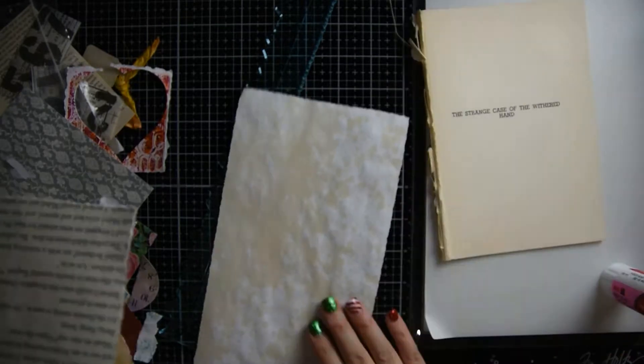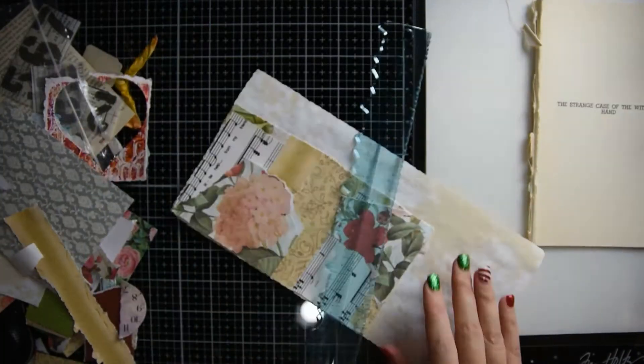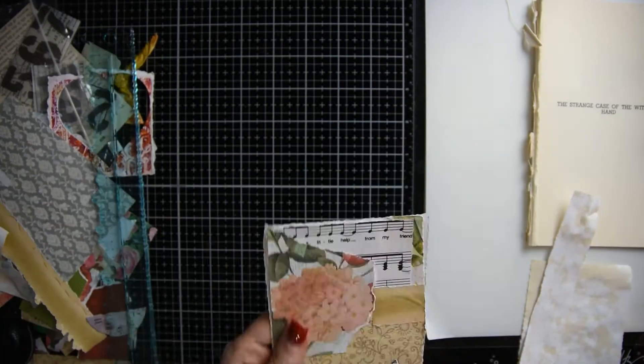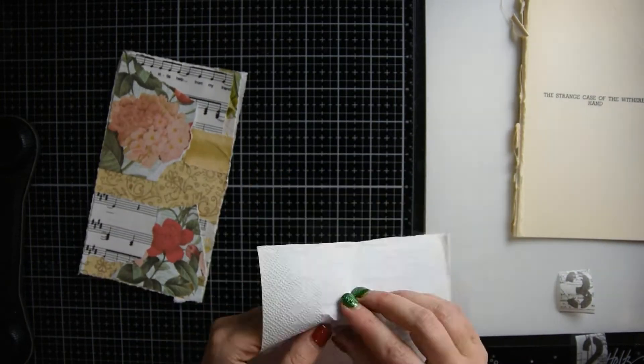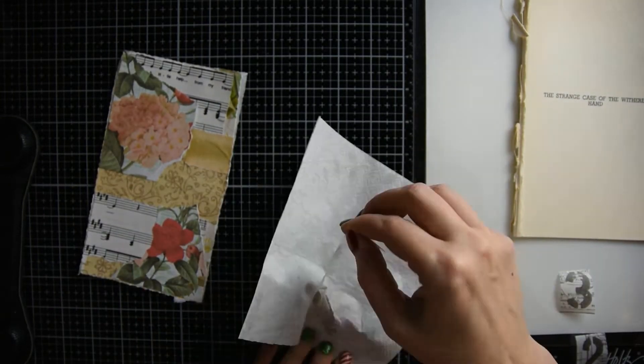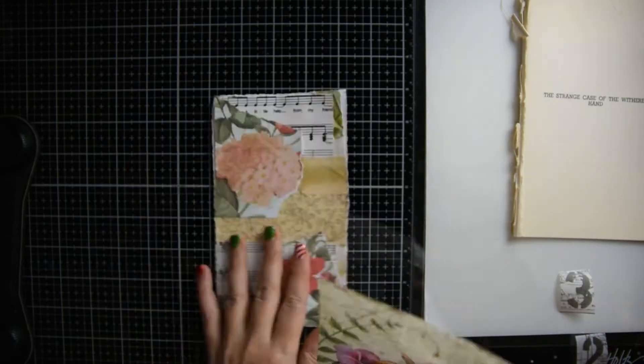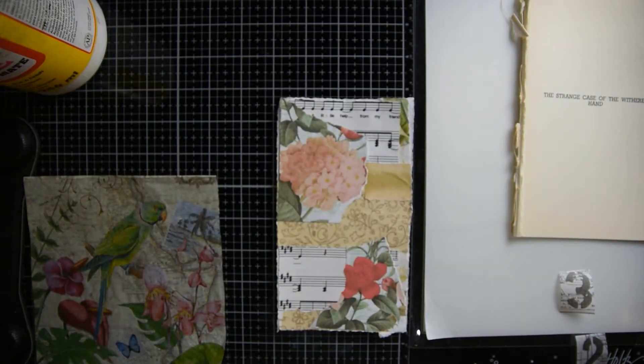Some coffee dyed paper on the back. And then I have this beautiful napkin. And I'm peeling off two layers of the back. And I'm going to get out some Mod Podge.